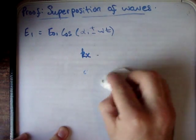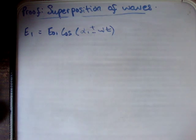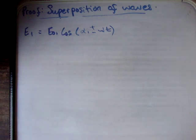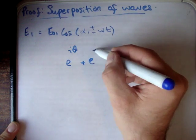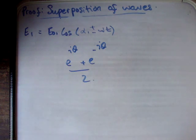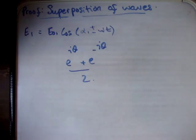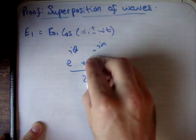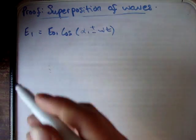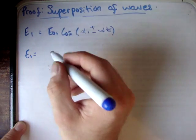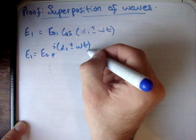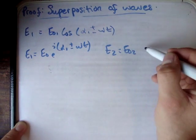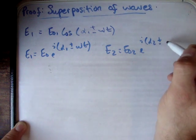For convenience, I'm going to convert this cosine into a complex exponential. If you want to know how to do that, I have a video on converting cosines to complex exponentials — essentially you use Euler's formula: e^(iθ) + e^(-iθ) over 2 equals cosine. So E1 is equal to E01 times e^(i(α1 ± ωt)), and E2 is equal to E02 times e^(i(α2 ± ωt)).